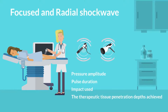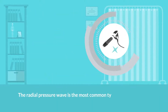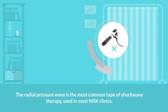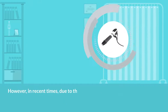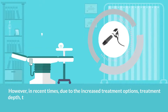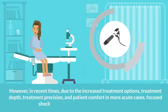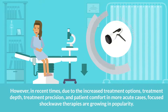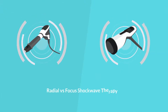The radial pressure wave is the most common type of shockwave therapy used in most MSK clinics. However, in recent times, due to increased treatment options, treatment depth, treatment precision, and patient comfort in more acute cases, focused shockwave therapies are growing in popularity. In this video, we will discuss the difference between radial versus focused shockwave therapy.